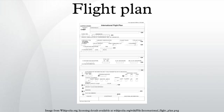Mean sea level is the average height of the surface of the sea for all stages of tide, used as a reference for elevations. A nautical mile is a unit of distance used in aviation equal to approximately one minute of arc of latitude. It is defined to be 1,852 meters exactly, or approximately 1.15 statute miles.